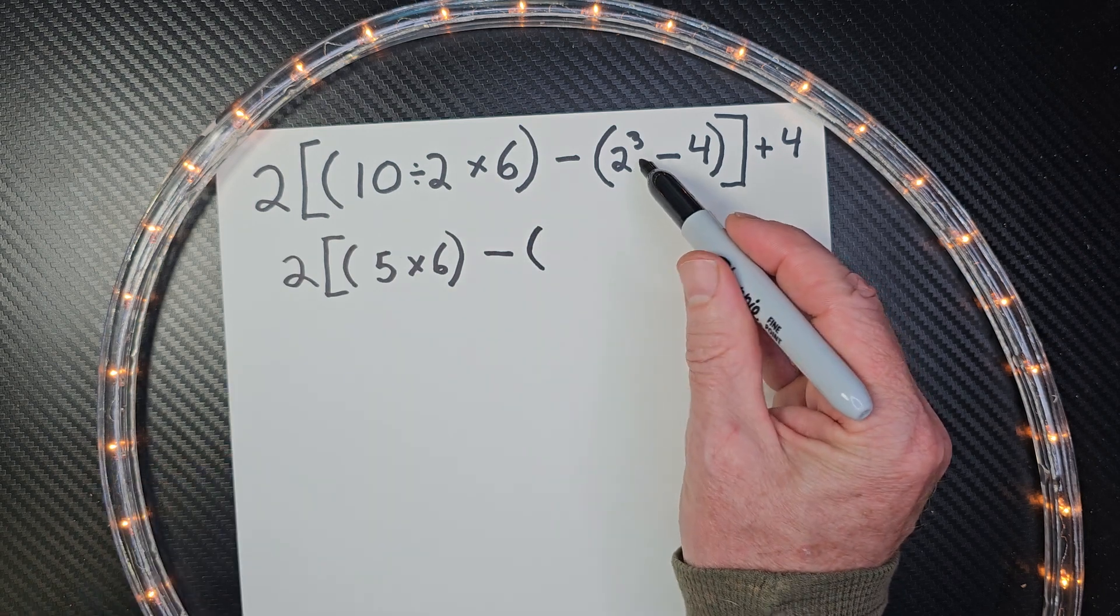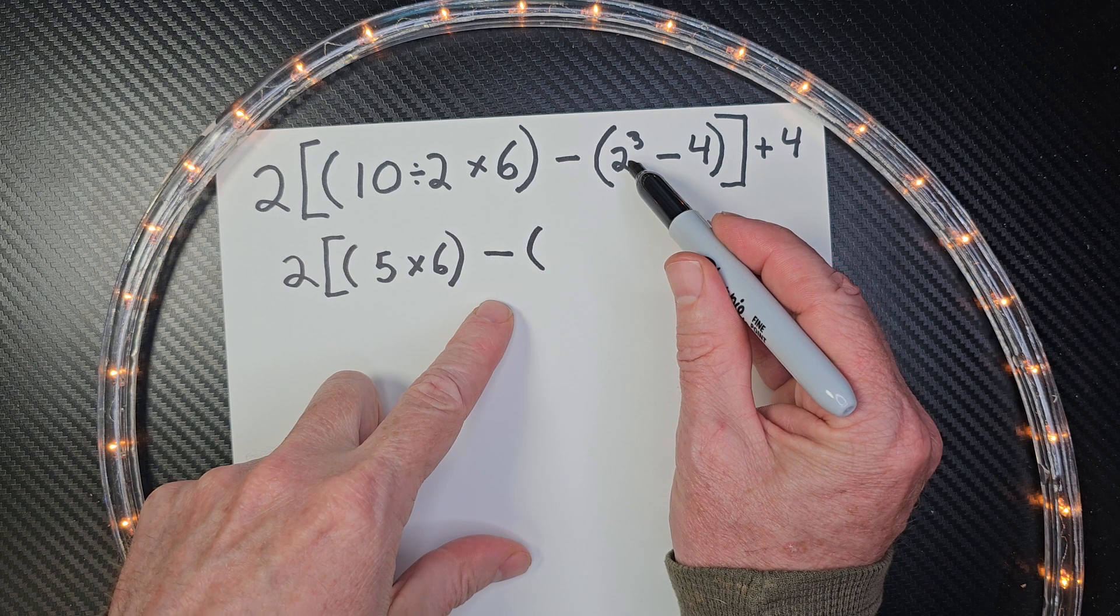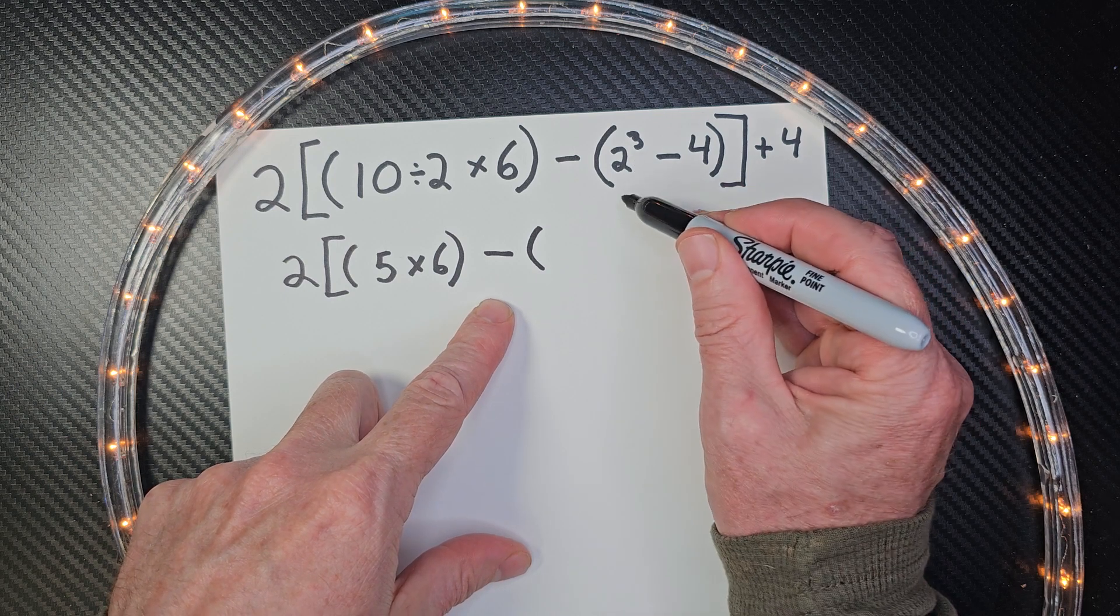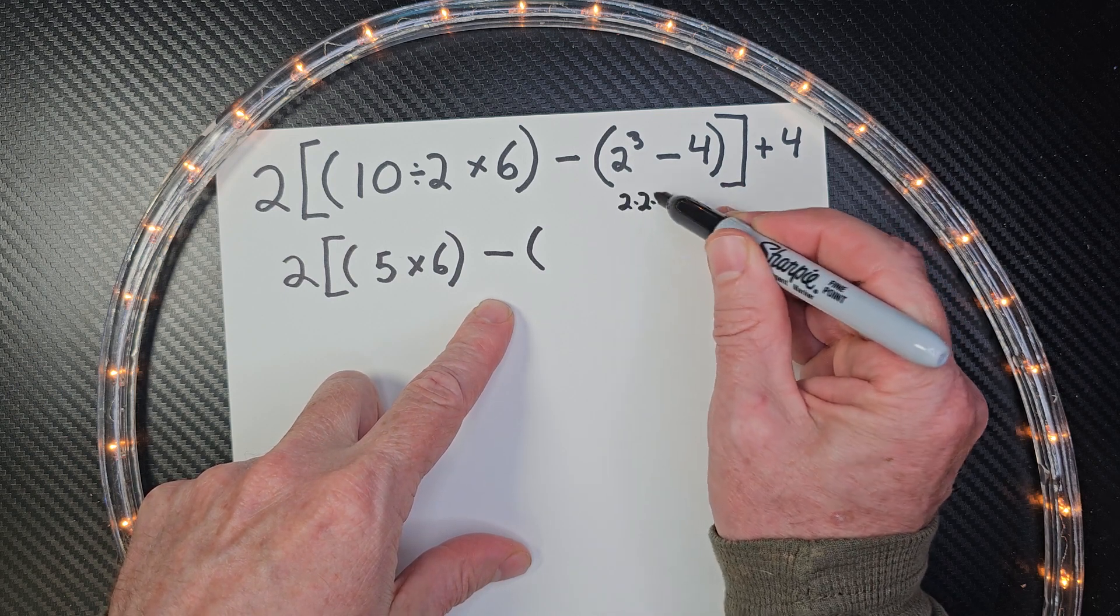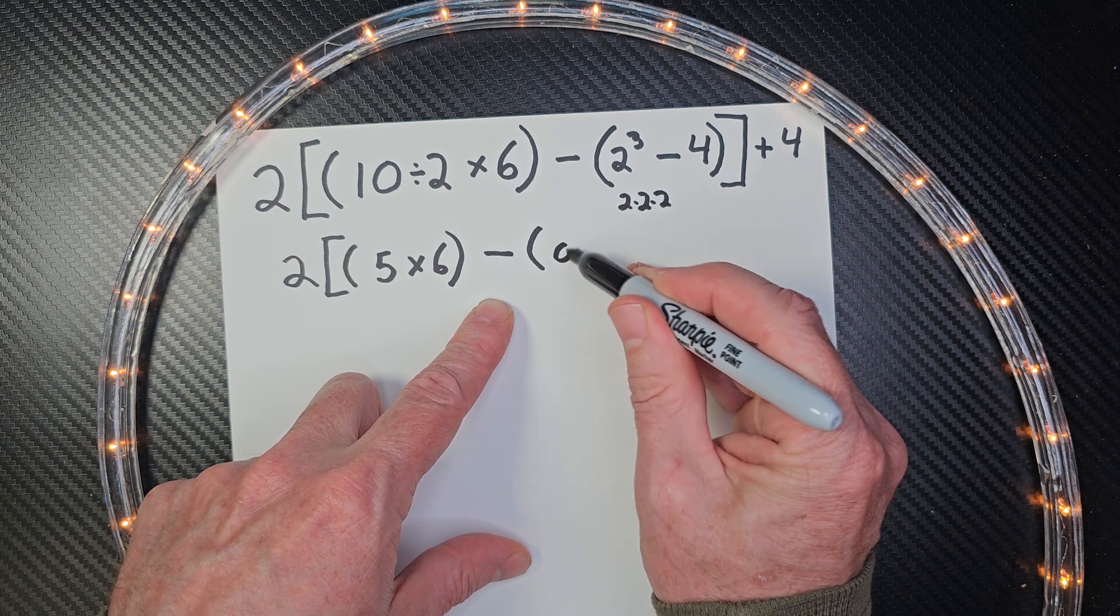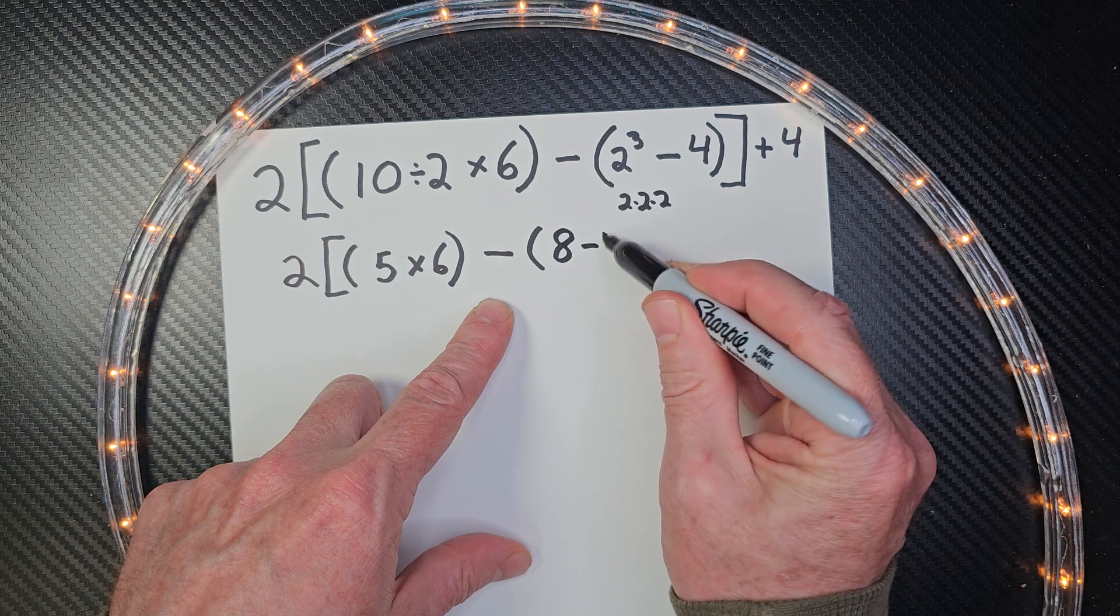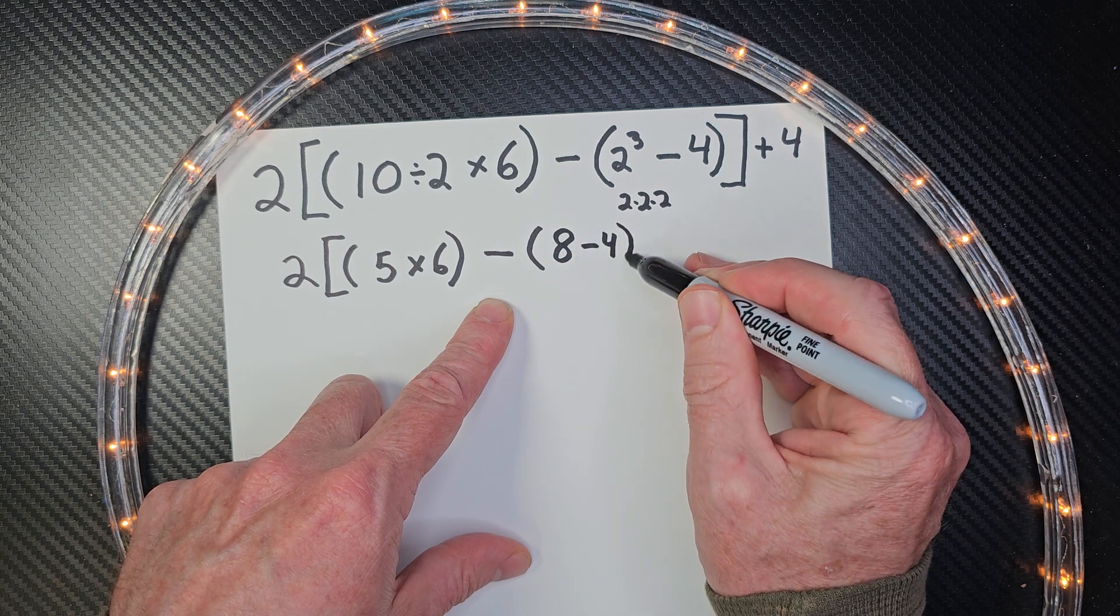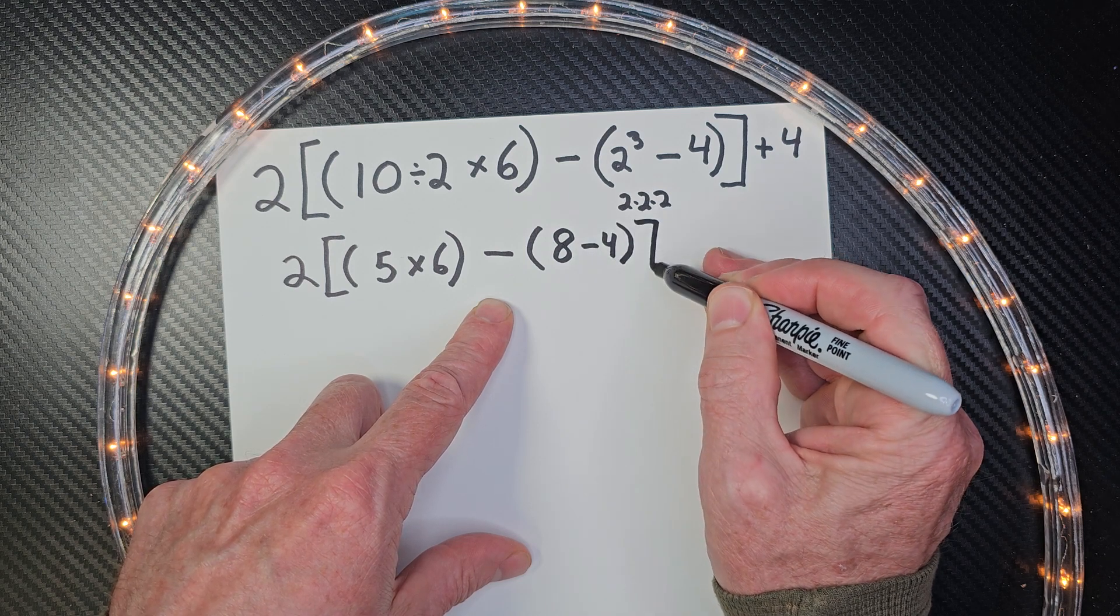And now I'm going to do what's inside these parentheses. 2 to the third power. That means 2 times 2 times 2. 2 times 2, 4. 4 times 2, 8. Don't be late. So I put an 8 right there, minus 4. My parentheses in that bracket.